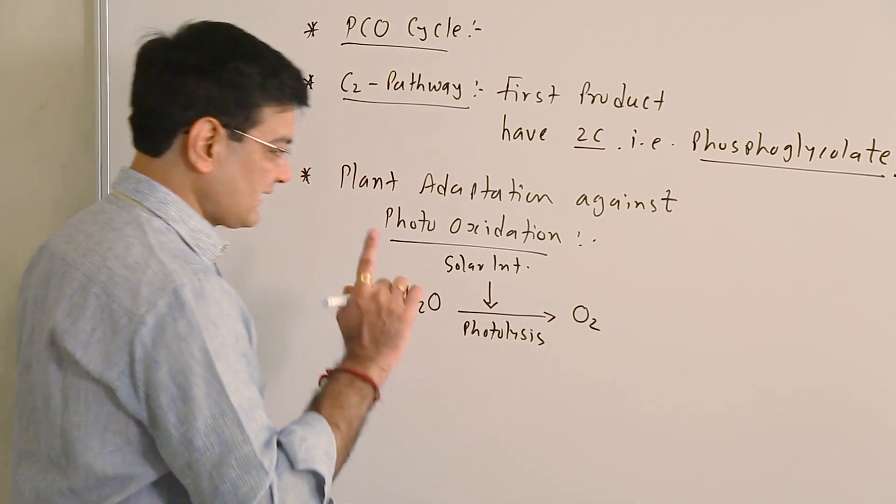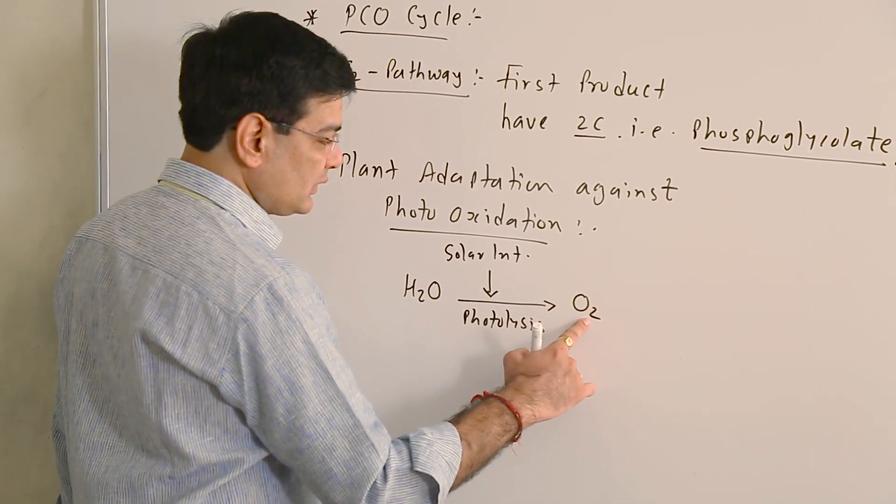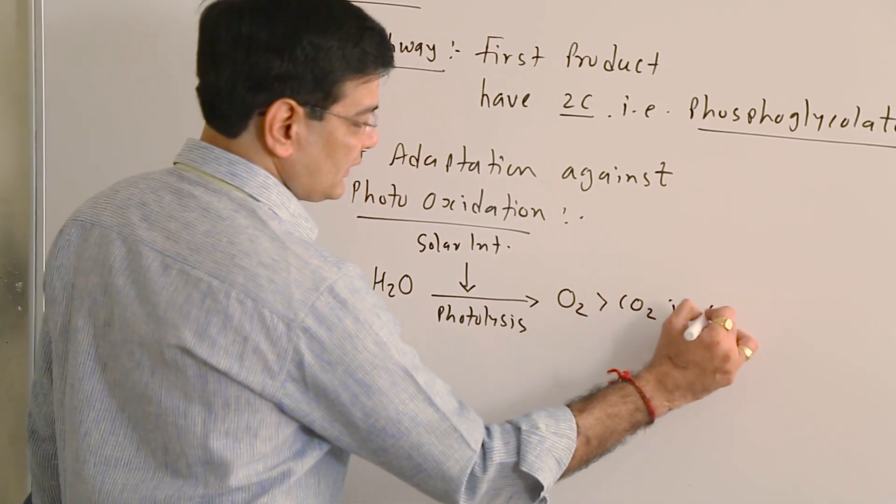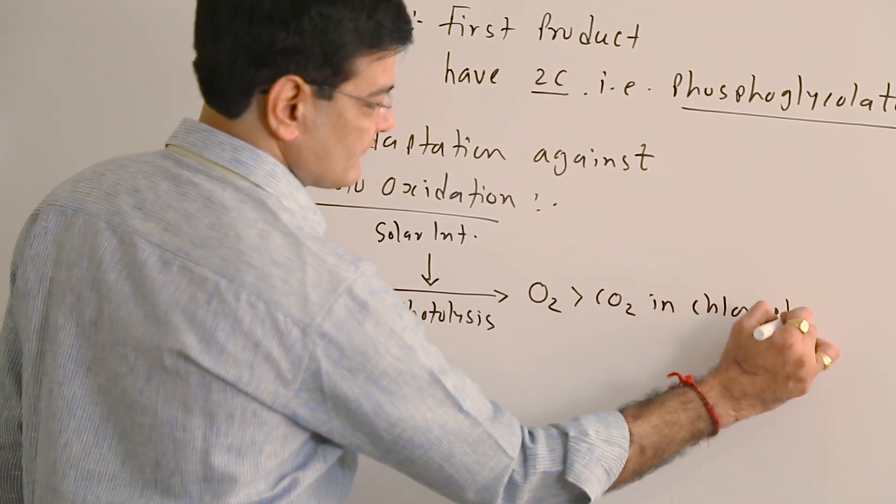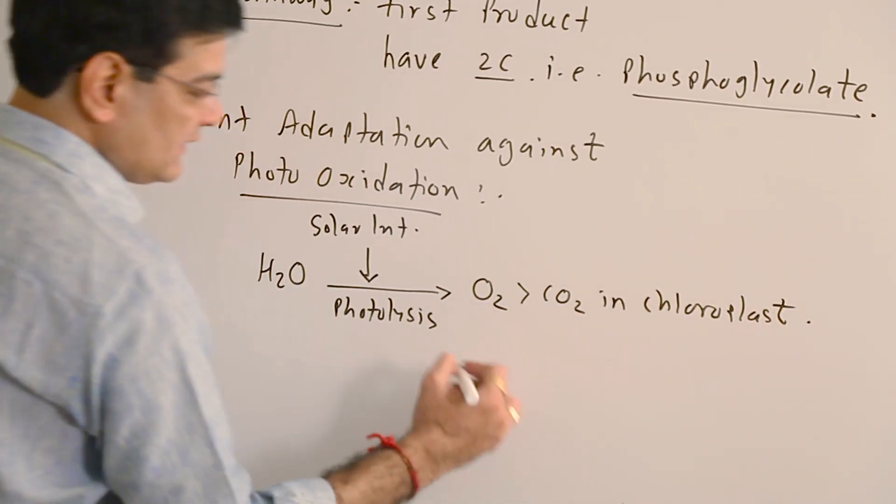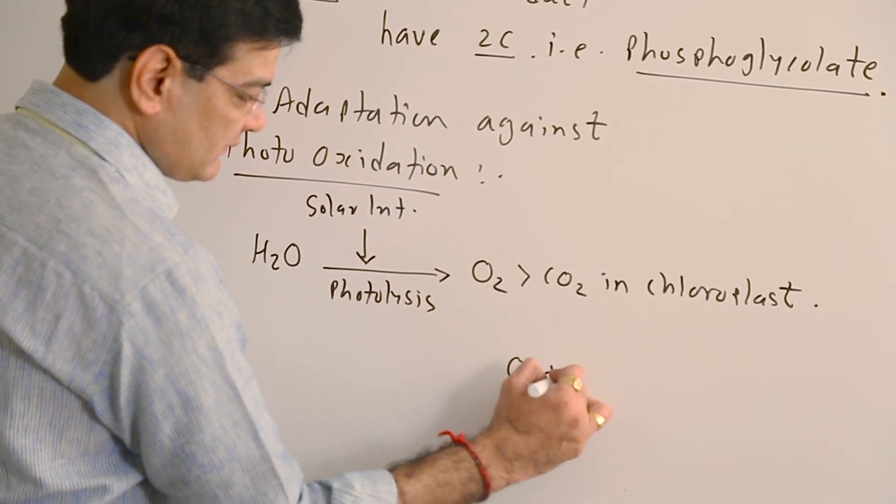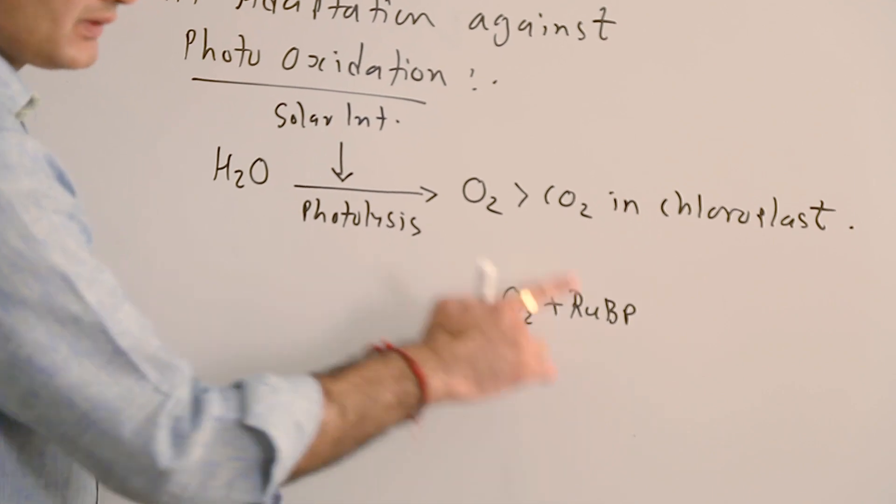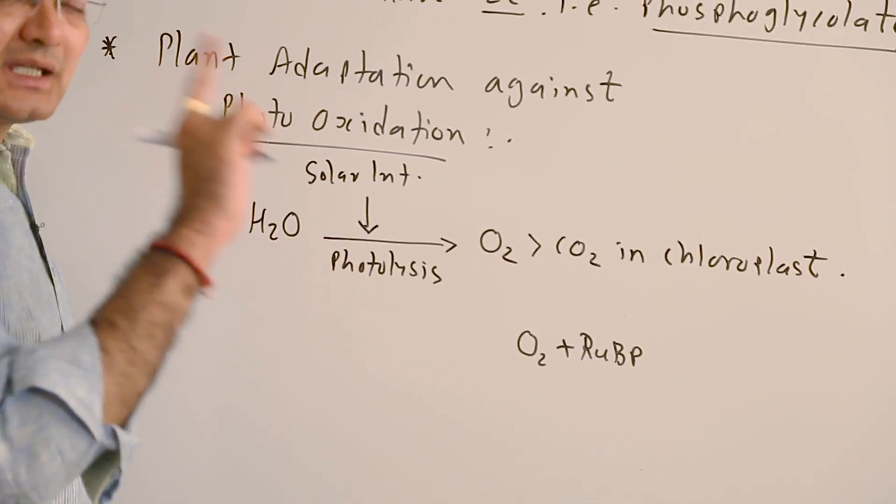But its side effect is that when O2 increases more than carbon dioxide in chloroplasts, at that time this oxygen reacts with ribulose bisphosphate, which is the reactant for the photosynthetic dark reaction.